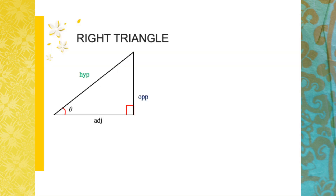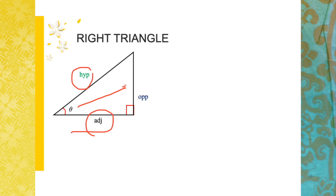The six trigonometric functions of a right triangle with an acute angle are defined by ratios of two sides of the triangle. The sides of a right triangle are the side opposite to your acute angle, the side that is adjacent, and of course the hypotenuse.